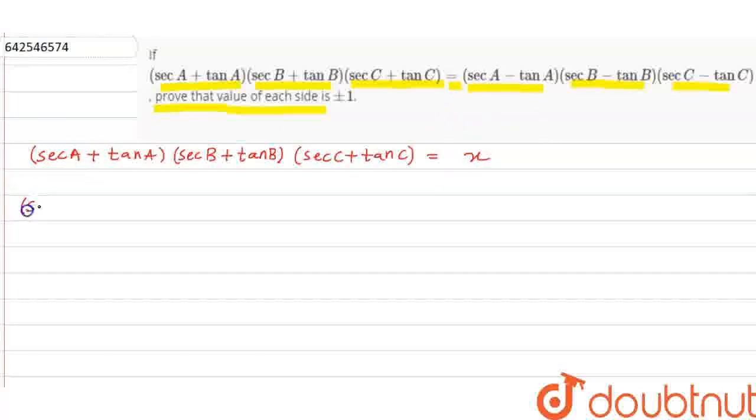Now also assume sec A minus tan A into sec B minus tan B into sec C minus tan C is equal to x. Also x, because these are actually equal. That's why we label both x.